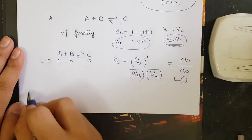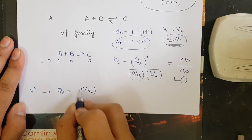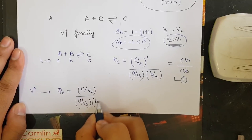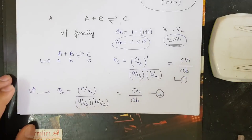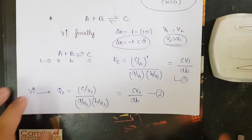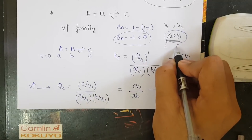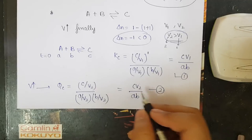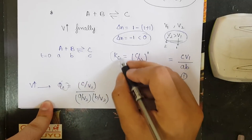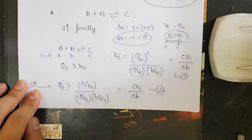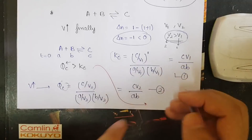When volume is increased to V2, Qc = (C/V2) / [(A/V2)(B/V2)] = C·V2 / (A·B) — equation number two. Taking V2 = 2 and V1 = 1: equation two is multiplied by factor 2 while equation one by factor 1, so Qc > Kc. When Qc > Kc, the reaction moves in the backward direction. So when volume is increased and delta n < 0, the reaction moves backward.